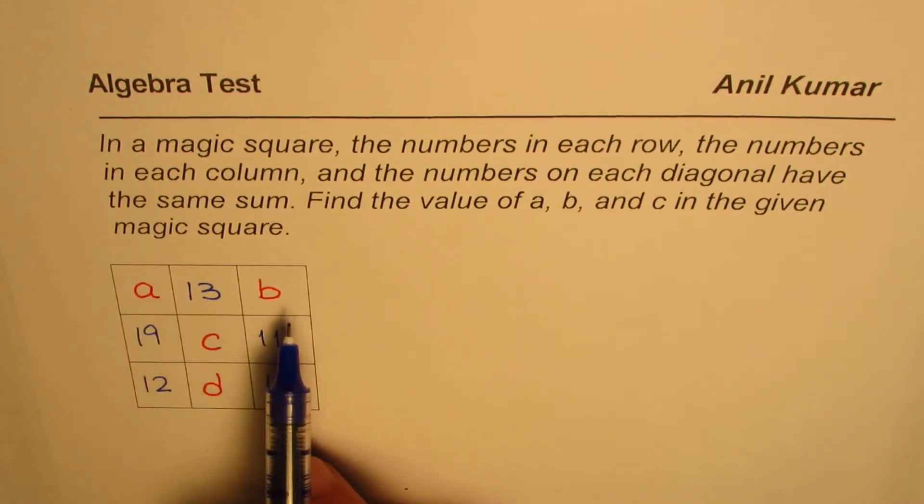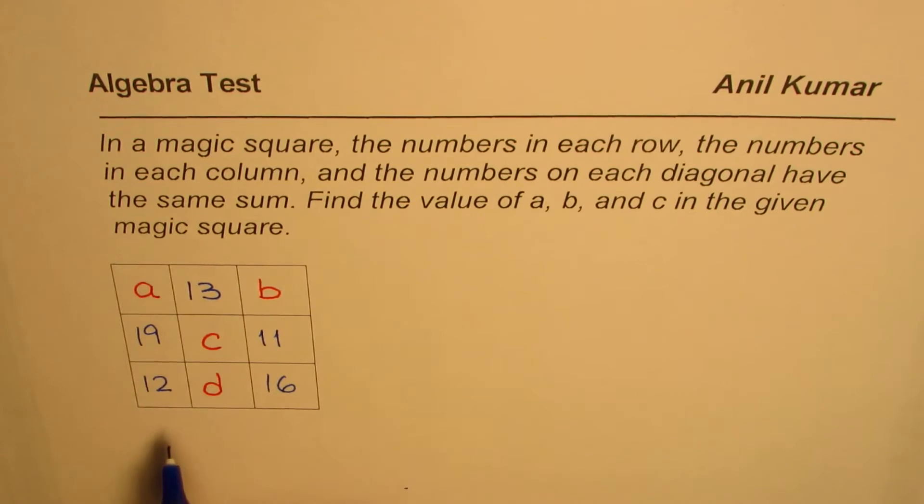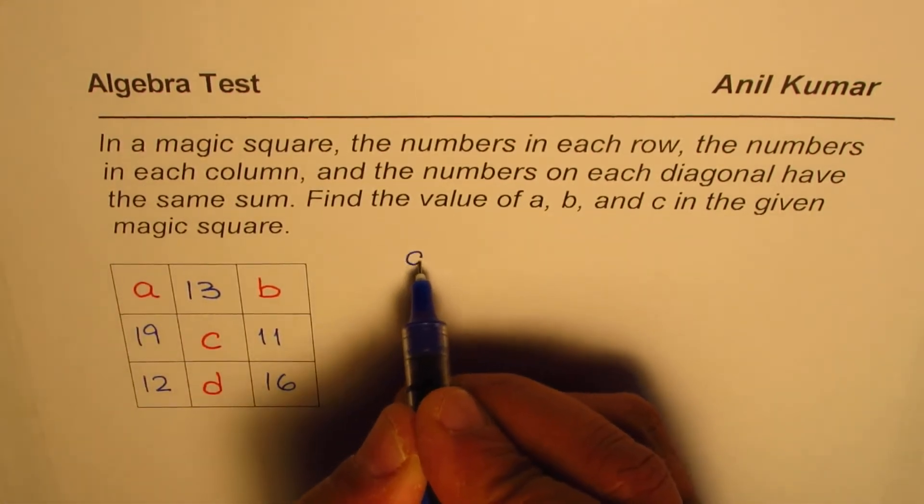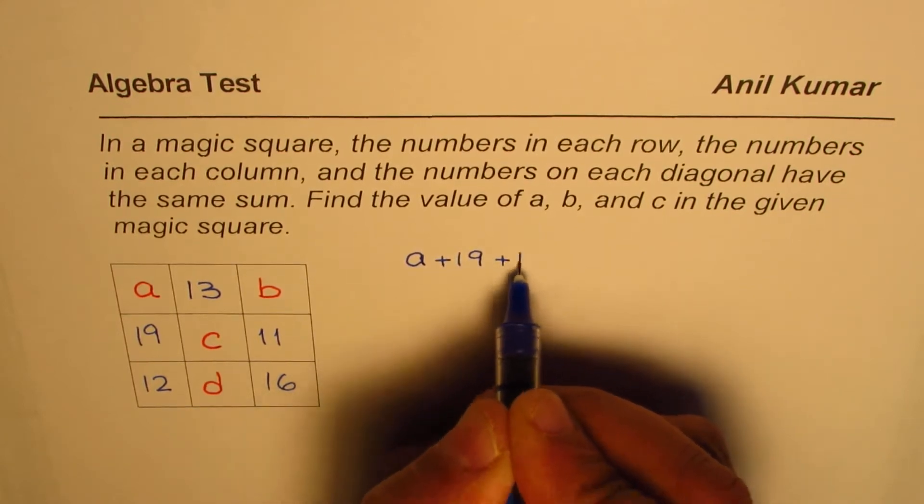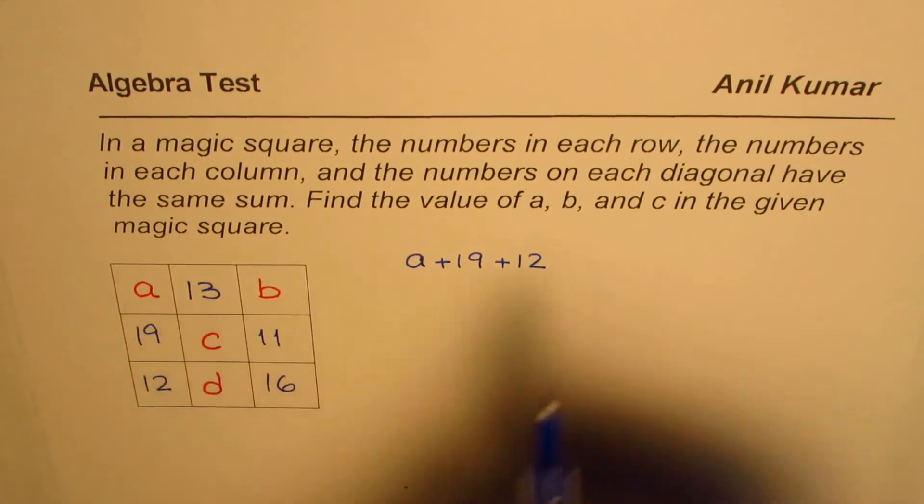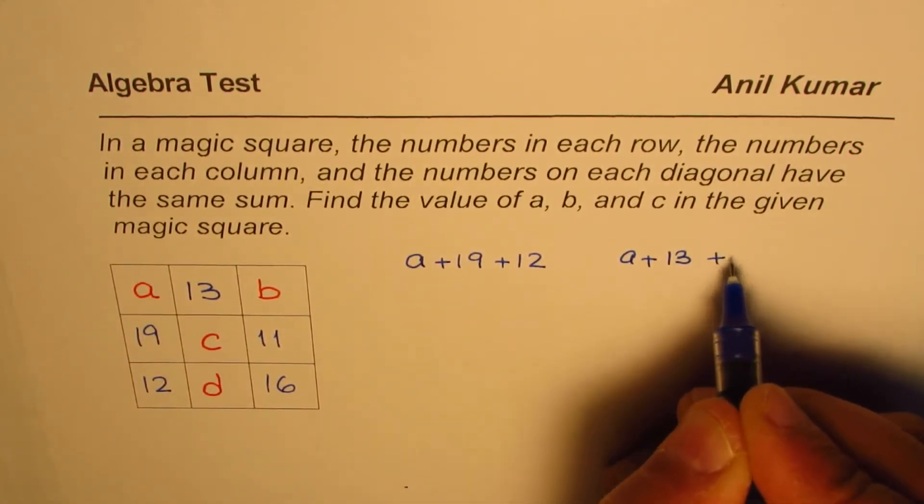Since the sum is the same, let's think about the first row and the first column. I can write the sum of the first column as A plus 19 plus 12, and I can write the sum of the first row as A plus 13 plus B.